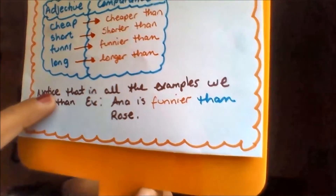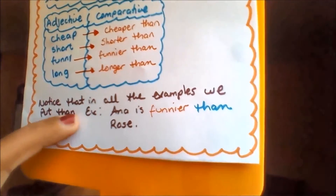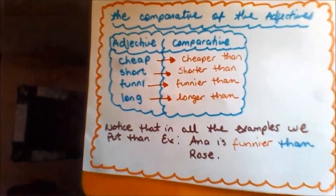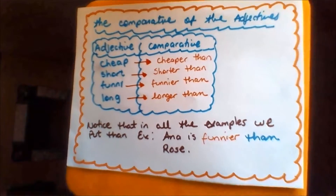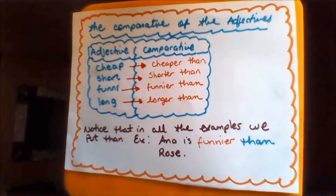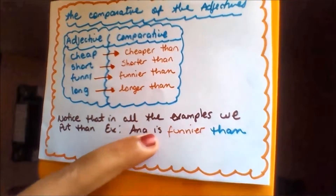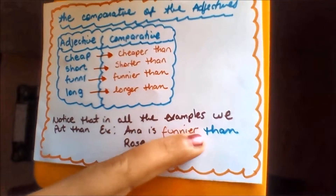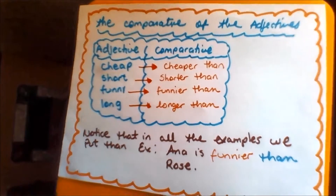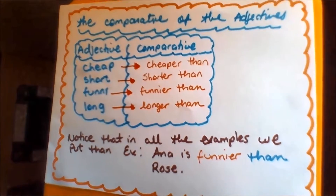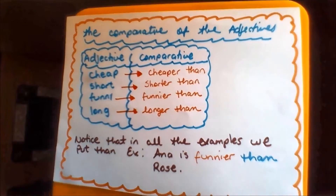Note that in all the examples, we put than. En todos los ejemplos, cuando vamos a utilizar el comparativo, utilizamos than. For example, here: Anna is funnier than Rose. Anna es más graciosa que Rose. Pero siempre necesitamos el than.